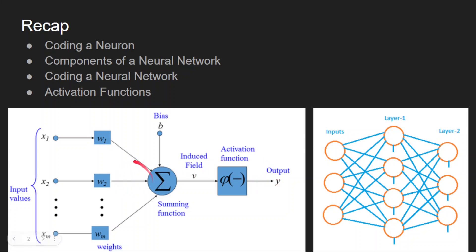We have done all these computations and implemented them in Python. Then we covered the neural network, which is a combination of individual neurons, and built these neural networks in Python from scratch. We also went through different activation functions and implemented all of them in Python. Now, where should we go from here? We understand how neural networks work and the operations that happen inside them, but how do we use these networks for solving real-world problems? How should we approach the problem?